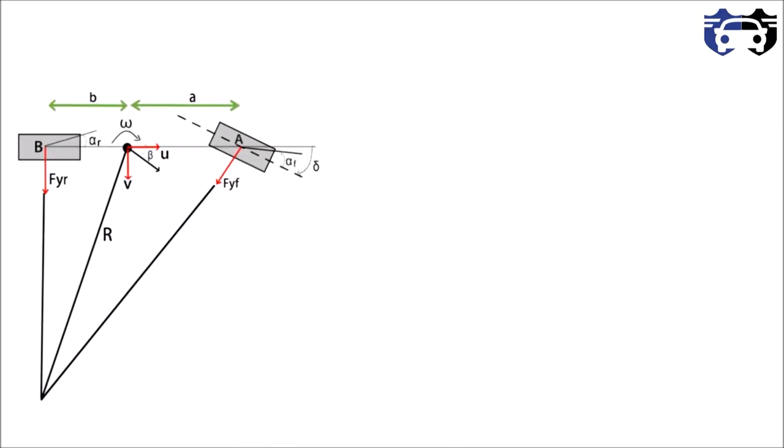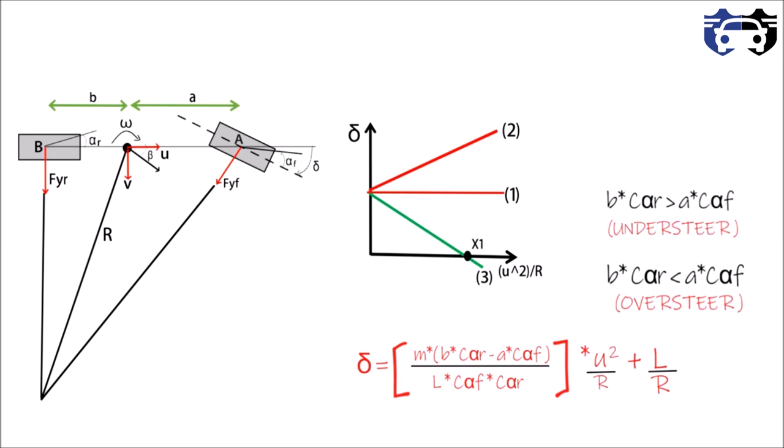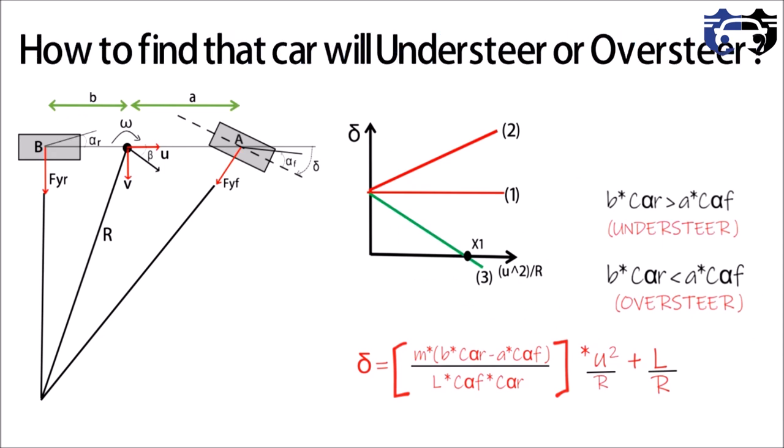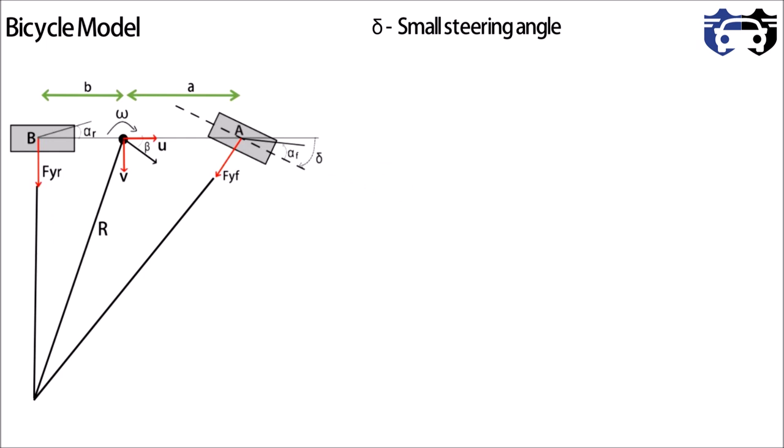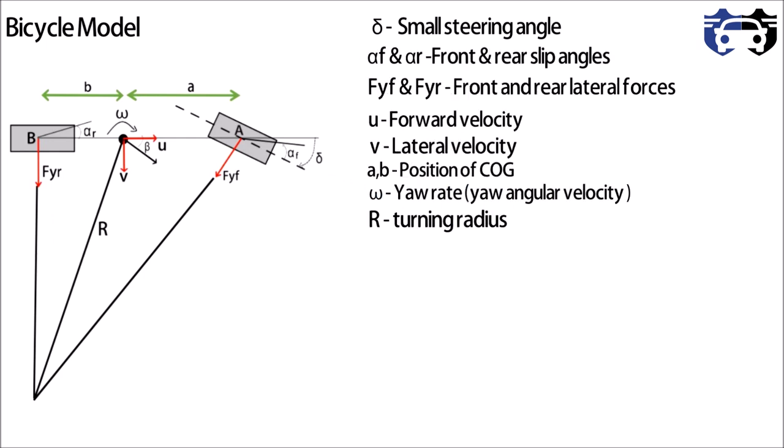What's up everyone, welcome to my channel. In this video you will learn how to find if a car will understeer or oversteer, so without spending much time let's start. Now, here this is the bicycle model. On the right you can see the meaning of all the notations. I'm assuming that the lateral force Fyf is making a small angle theta with the vertical.